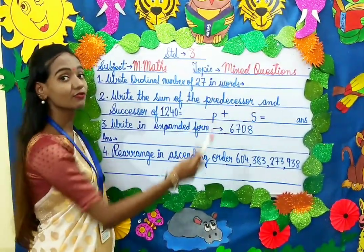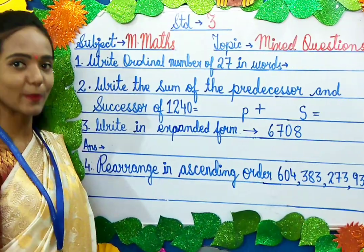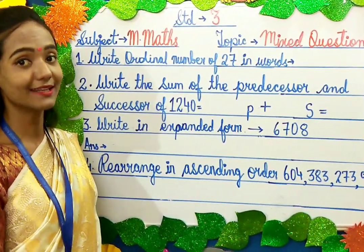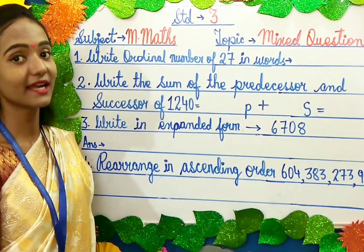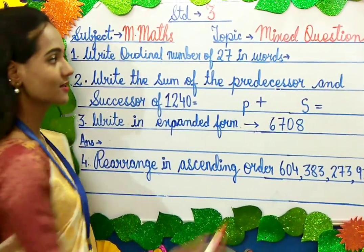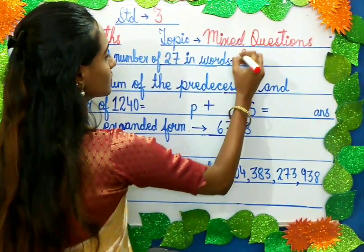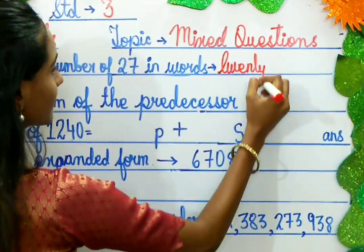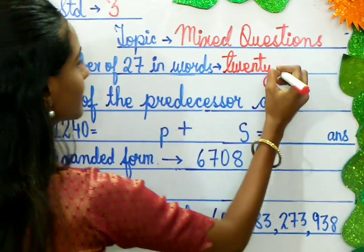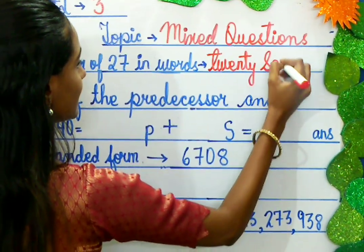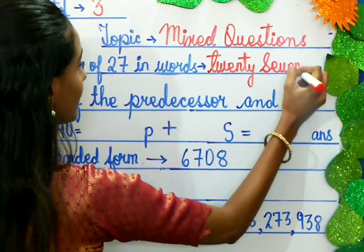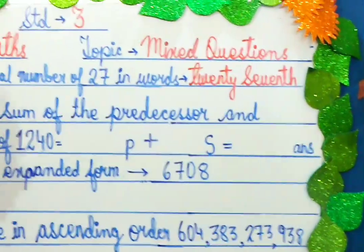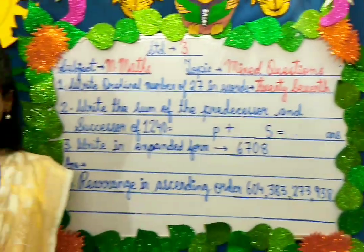Come children, let's solve the question. We have to write in words, which means you have to write the spelling. So 27 in ordinal number becomes 27th — we write 'th' at the end. The spelling is twenty-seventh: S-E-V-E-N, and at the end we just add 'th'.